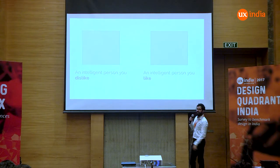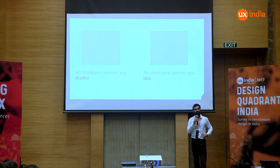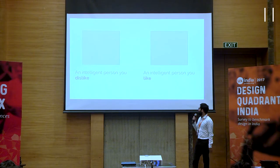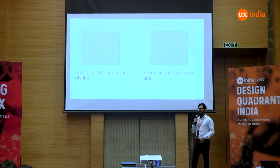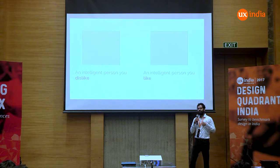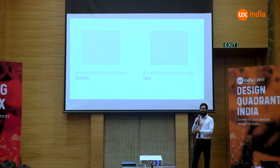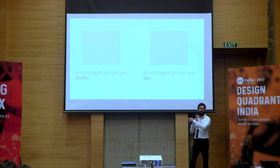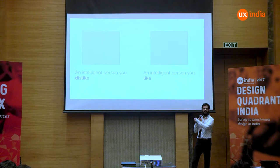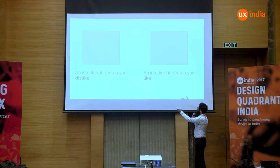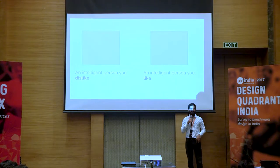And in this box, I would like you to imagine an intelligent person whom you liked. Again, it could be anyone — it could be your friend, your spouse, or someone you have met. And I would like you to spend a few moments thinking about why this is the case. They were both intelligent, but you liked one person and you disliked one person. What were those things because of which you put that person in that box and this person in this box?